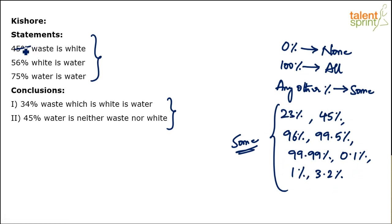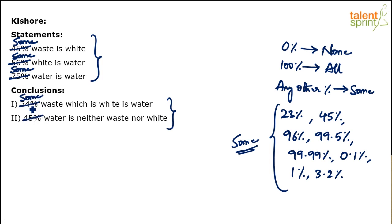So '45% waste is white' is nothing but 'some waste is white'. '56% white is water' is 'some white is water'. '75% water is water' is 'some water is water'. And there is no difference between any of these percentages — all of them mean the same thing: some.